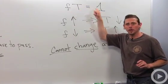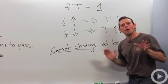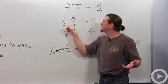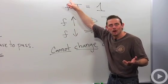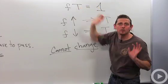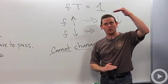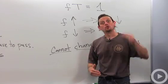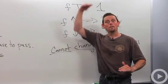Frequency times period equals one. So what that means is that if I increase the frequency, well, that number is getting bigger, but the product's got to stay the same, so the period's got to go down. So bigger frequency, smaller period. Conversely, smaller frequency, bigger period.